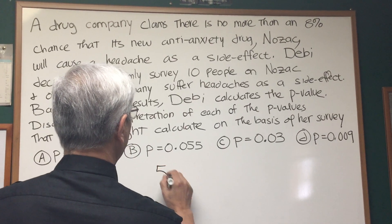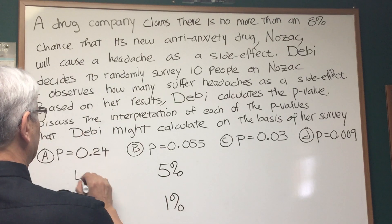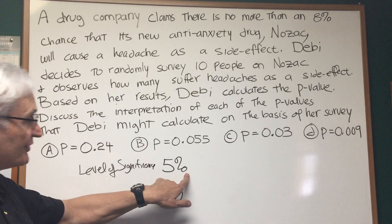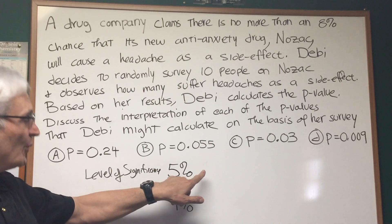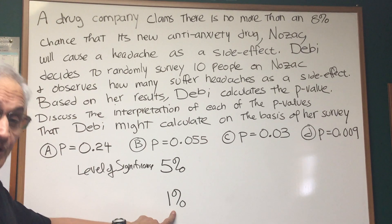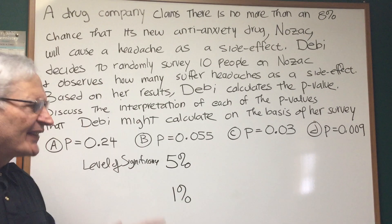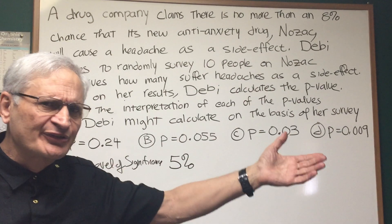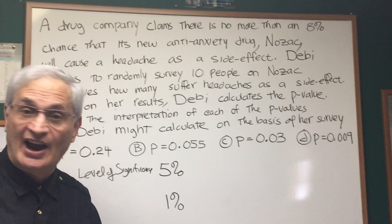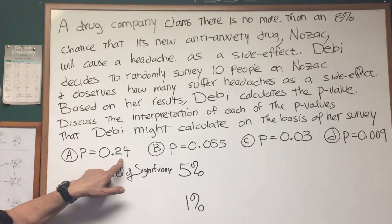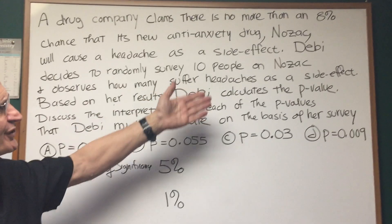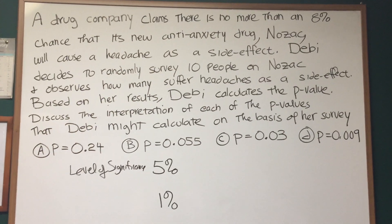There are two levels of significance: a 5% level of significance and a 1% level of significance. A 5% level of significance means if the p-value is 5% or less, we are compelled to reject the null hypothesis, with a 5% chance that we did so in error. There's a more stringent level of 1%: if the p-value is 1%, there's only a 1% chance our survey confirms the null hypothesis, and we reject it with only a 1% chance of error. So if the p-value is 0.24, or 24%, we're not compelled to reject the null hypothesis — that's still within the variation of the population.